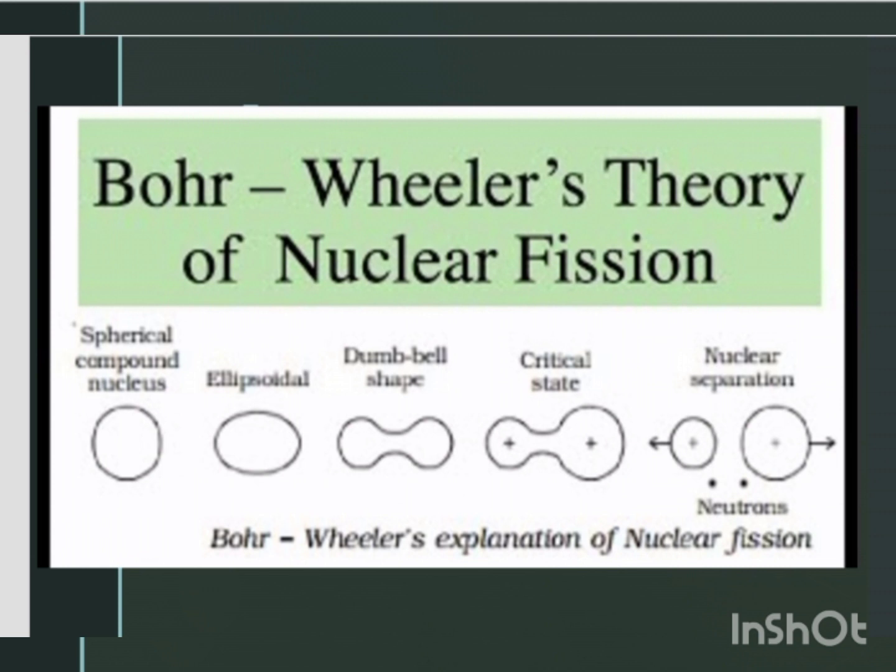In the same way, when the heavier nucleus absorbs a neutron, a compound nucleus is formed and is left in an excited state. The excitation energy sets up a series of rapid oscillations, and the compound nucleus undergoes distortion from a spherical to a dumbbell shape.